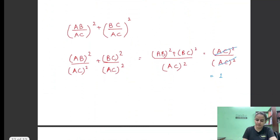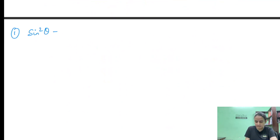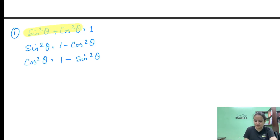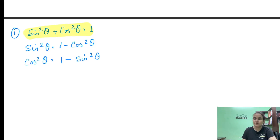अब यहां पर हमें एक और important चीज़ याद रखनी होगी। अगर sin²θ + cos²θ = 1 है, तो इसका मतलब यह हो गया कि: sin²θ = 1 - cos²θ, और cos²θ = 1 - sin²θ। तो जब हम एक identity पढ़ रहे हैं, तो उसके साथ 2 identities free में मिल रही हैं। हमें यह आना चाहिए कि एक side से दूसरे side variables को ले जाएं, ताकि हम उन्हें substitute करके easily question solve कर पाएं।